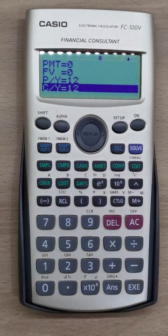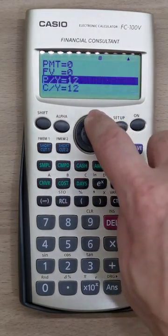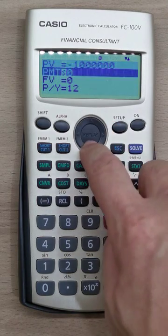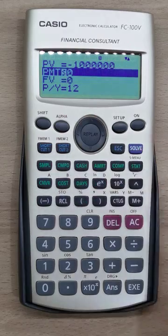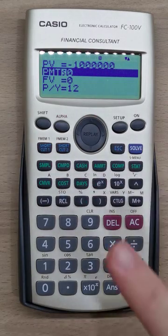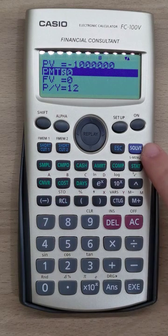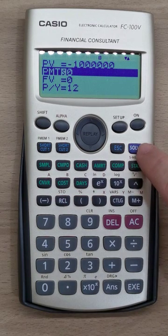There it goes. We have all the variables keyed in. So now we just go to the row we are trying to solve, which is payment, which is the monthly mortgage. Now we press, instead of enter, we will go to solve instead. So go ahead and press solve.